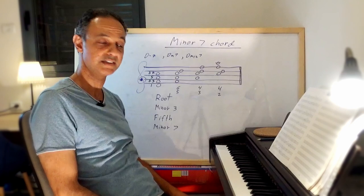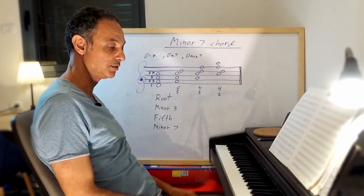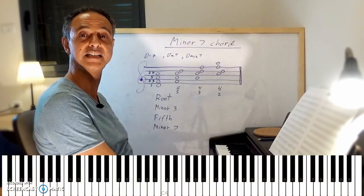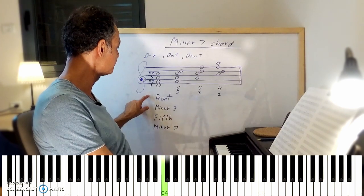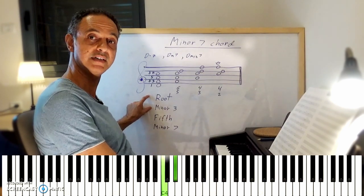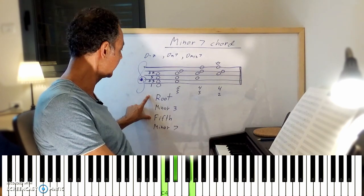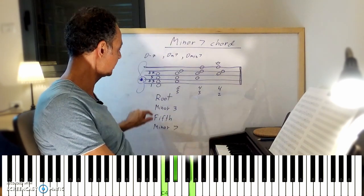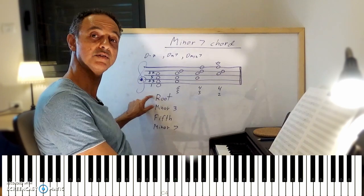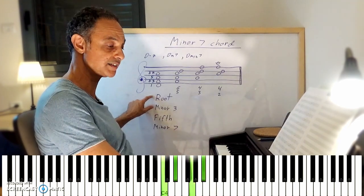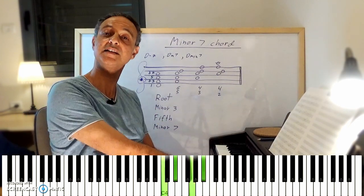And of course you can transpose it. For example, the root is going to be C. Then a minor third up is E-flat. A perfect fifth up is G. And a minor seventh up from the root is B-flat. So this is a C minor seventh chord.